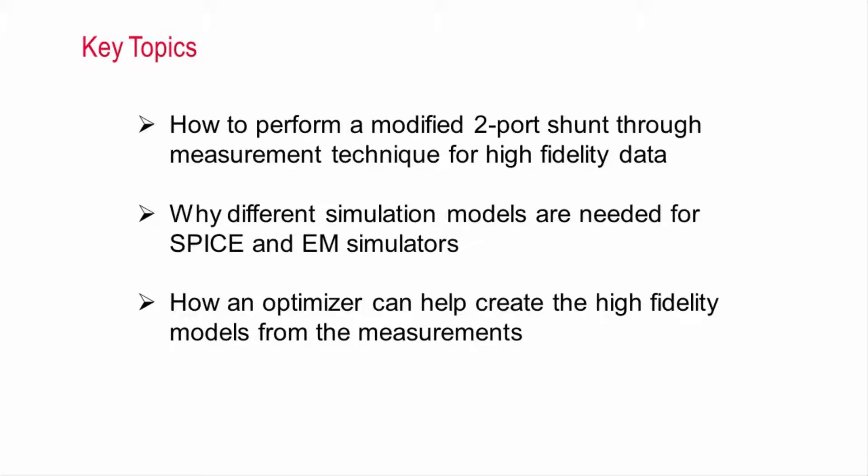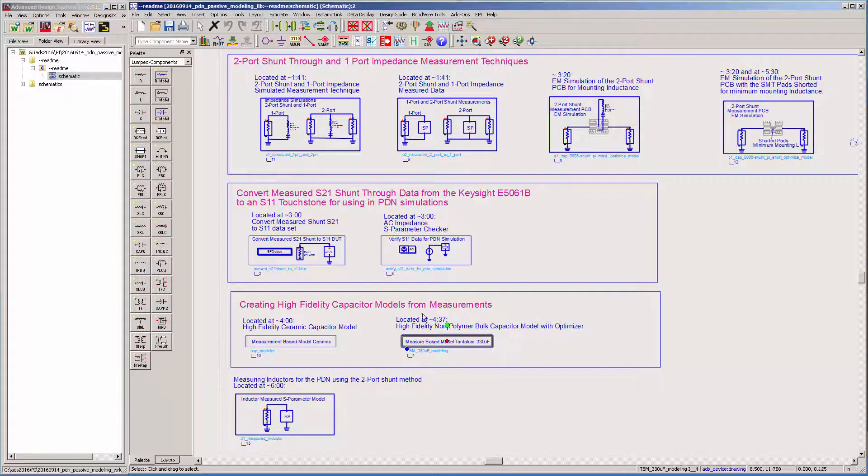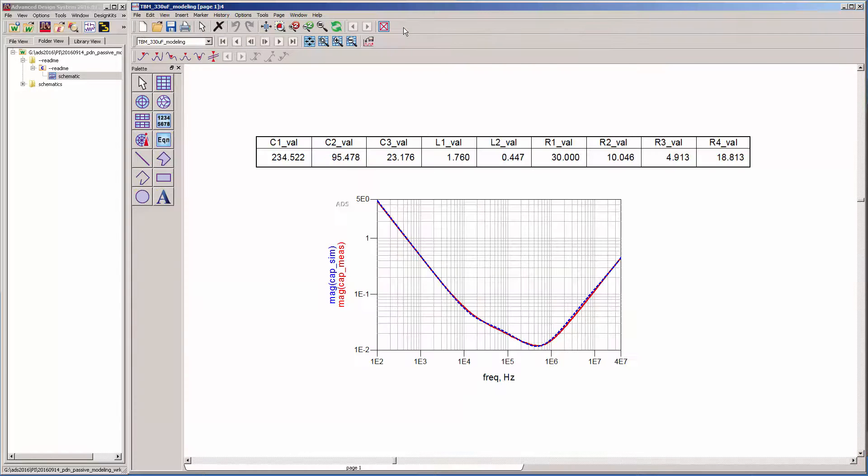In this video you'll learn how to perform a modified two-port shunt through measurement to obtain high quality data, why we need different simulation models for SPICE and EM simulators, and how an optimizer can help create broadband SPICE models from the measurements. At the end of the video you'll be able to download my simulator workspace so that you can apply these techniques to your own projects.